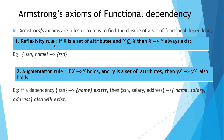The first rule is the reflexivity rule. If x is a set of attributes and y is a subset of or same as x, then x to y always exists. One example: SSN and name to SSN is a functional dependency. Here SSN is a subset of SSN and name, so this functional dependency will always be true — if SSN and name repeats, SSN will be repeated.